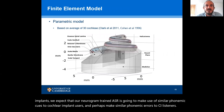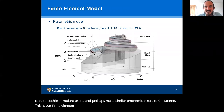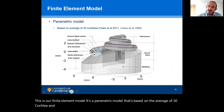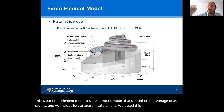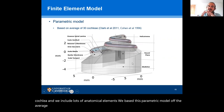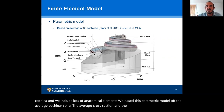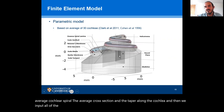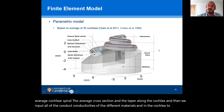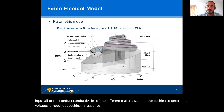This is our finite element model. It's a parametric model based on the average of 30 cochleae and includes many anatomical elements. We've based this parametric model on the average cochlear spiral, the average cross section, and the taper along the cochlea. We then input all of the conductivities of the different materials in the cochlea to determine voltages throughout the cochlea in response to electrical stimulation.